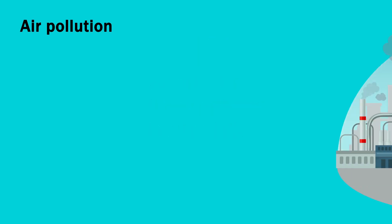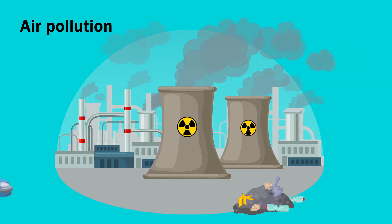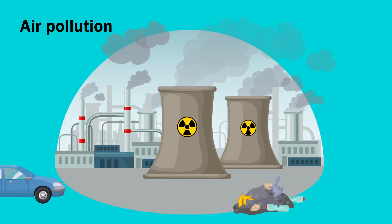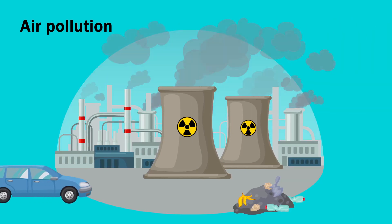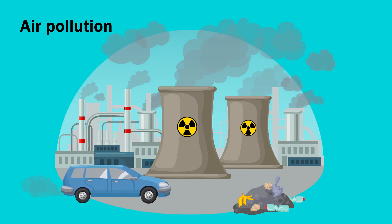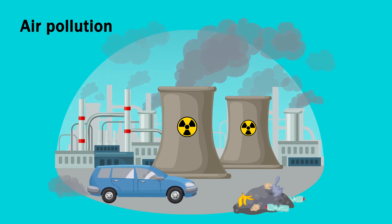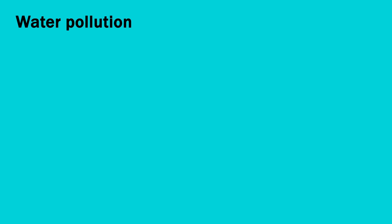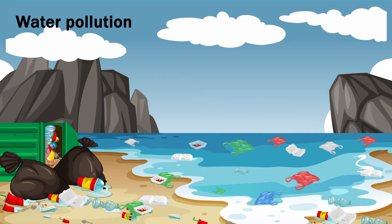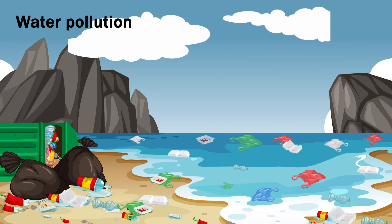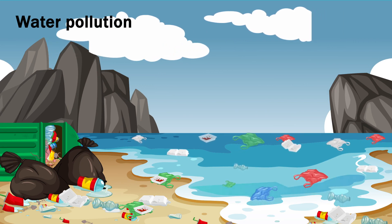Air pollution is contamination of the indoor or outdoor environment by any chemical, physical, or biological agent that modifies the natural characteristics of the atmosphere. Water pollution is the contamination of water sources by substances which make the water unusable.